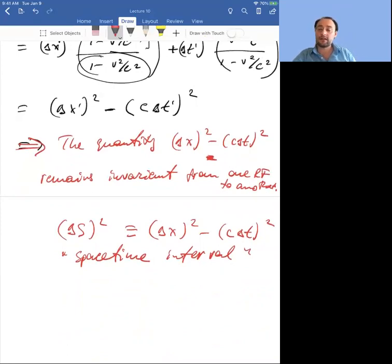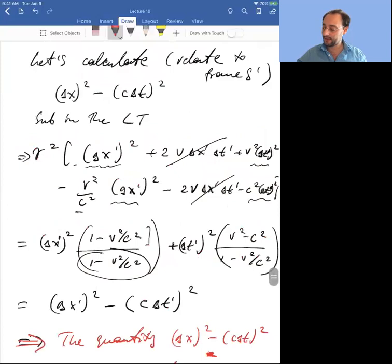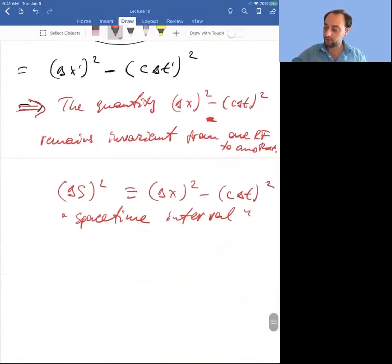We've discovered an invariant quantity, and this is a big deal. Special relativity is not so much about how things change from frame to frame, but it's about the fact that while all these things change, something remains invariant. It has very far-reaching consequences. But before we do that, let's just do an example. Let's go back to the Alice and Bob example.